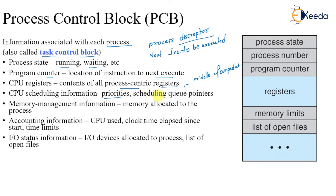CPU scheduling information refers to what kind of algorithm is used to assign processes to the CPU — for example FCFS (first come first serve) or preemptive scheduling algorithms. Memory management information covers the allocation of memory for the process. Accounting information includes how much CPU time was used, clock time elapsed, start time, and time limits.